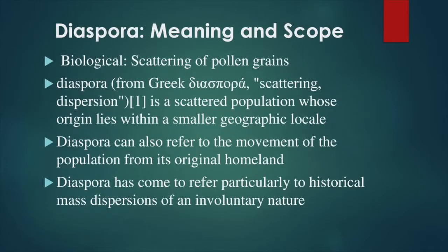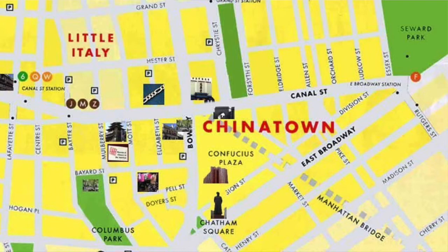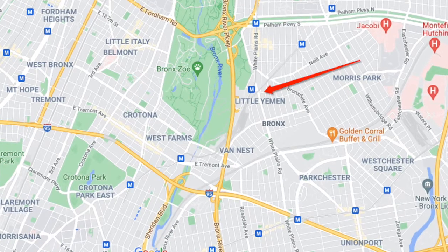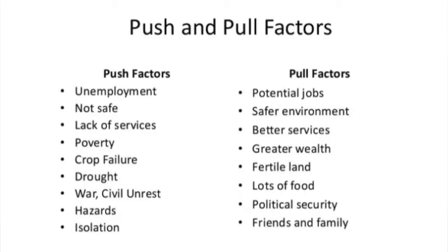In Part 1, we learned about the word diaspora. A diaspora is a massive movement of people from a homeland, and these people get transplanted into a new section of the world. They bring their culture from the old world to the new world and tend to live in neighborhoods with a culture familiar to their mother country. I gave the example of Little Yemen, which is a new neighborhood in the Bronx. We also went over push and pull factors that greatly influence families or a person's choice to immigrate to a new country.